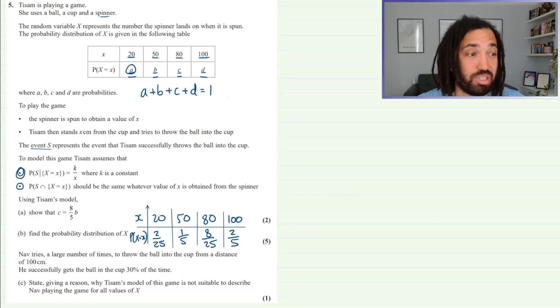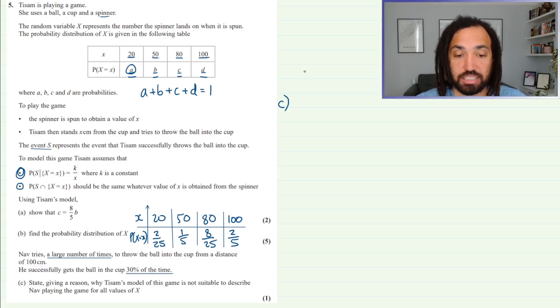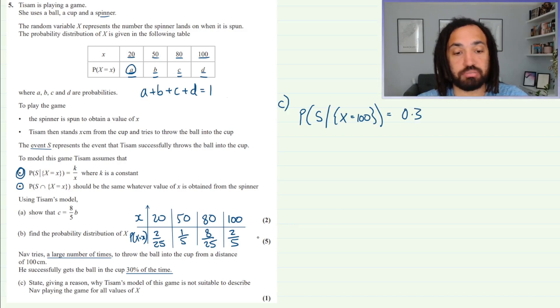Okay, next question C which is a real cheeky question because like for one mark you've got to do a lot of work. Anyway, Nav tries a large number of times to throw the ball into the cup from a distance of 100 centimeters. A large number of times, that's important, it means that we can trust this probability. He successfully gets the ball into the cup 30 percent of the time. So we're going to assume that the probability that he successfully gets the ball into the cup, S, given that he stands a distance away of 100, is going to equal 30 percent or 0.3.